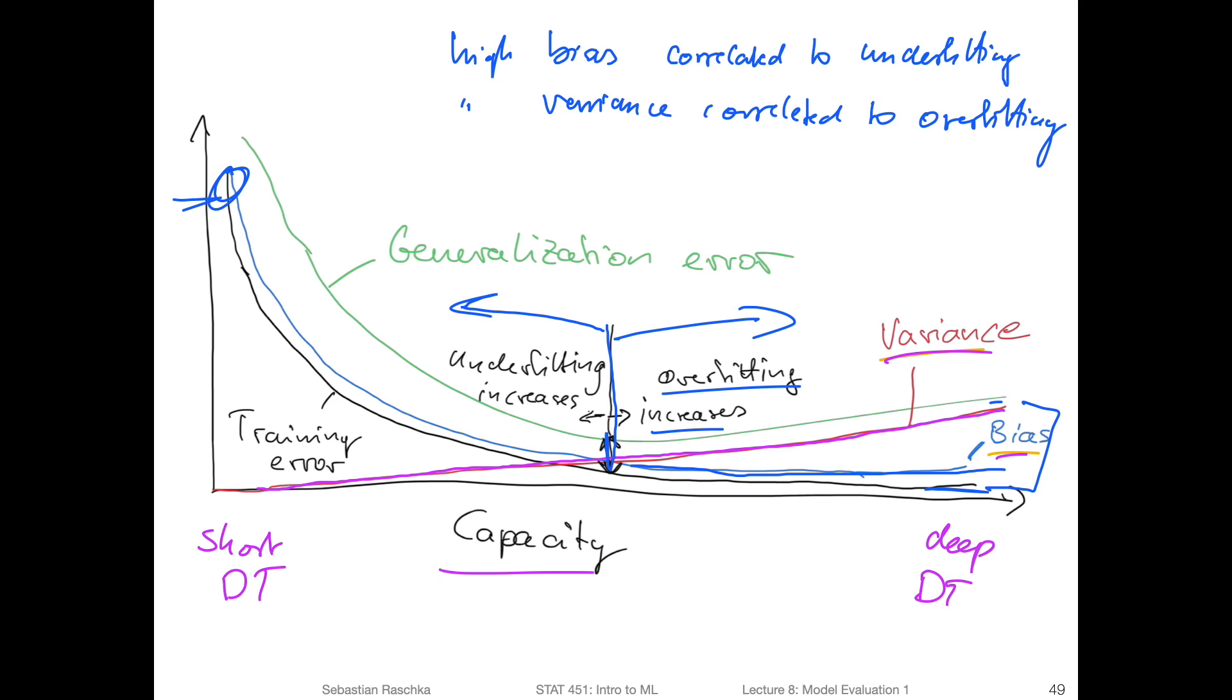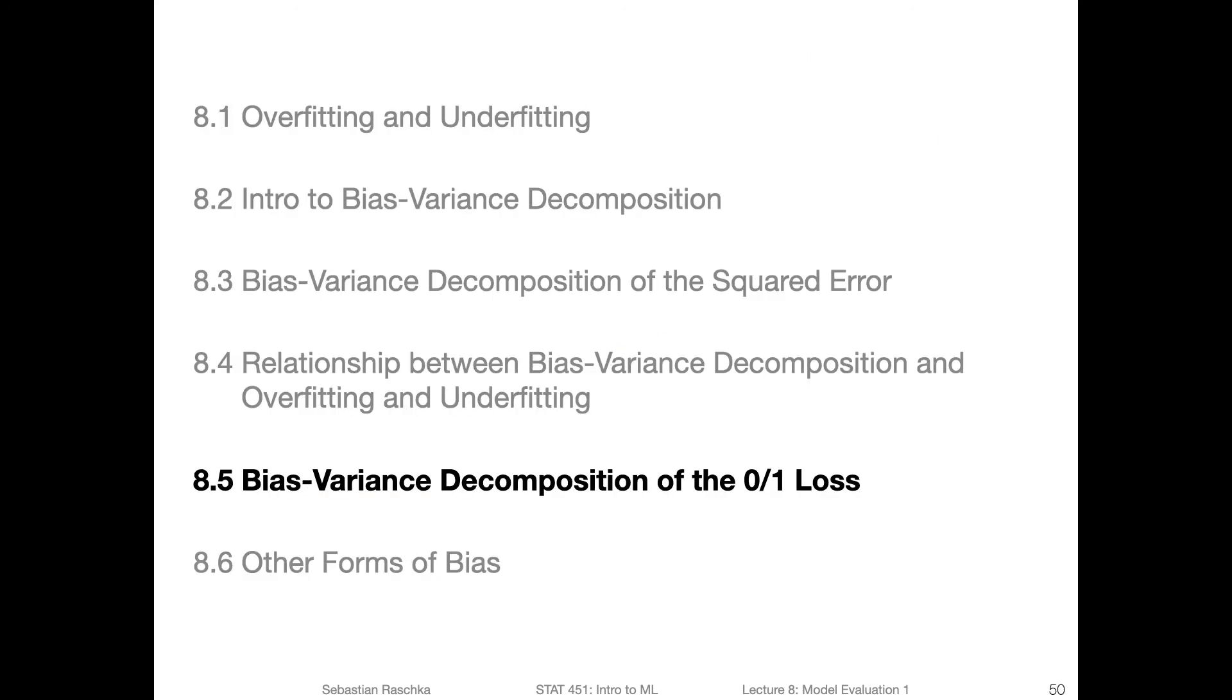Okay, so that's it for the relationship between overfitting and underfitting to bias and variance. Yes, so in the next video we will also take a brief look at the bias-variance decomposition of the 0/1 loss. It's more like, I would say, an optional topic. It's closer to our classification context, but it's somewhat more, I would say, less intuitive as decomposing the squared error loss. There are some—it's more like a workaround—but we will see more about that in the next video.